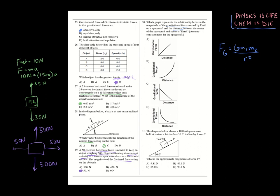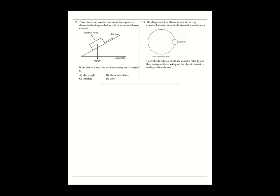We've reached the final two questions of this practice exam — thirty-three questions total, quite a lot. Our actual IA is only 25 questions, so be thankful for that. Number thirty-two: three forces act on a box at rest — think equilibrium. Net force equals zero when at rest or at constant velocity — so acceleration is also zero.